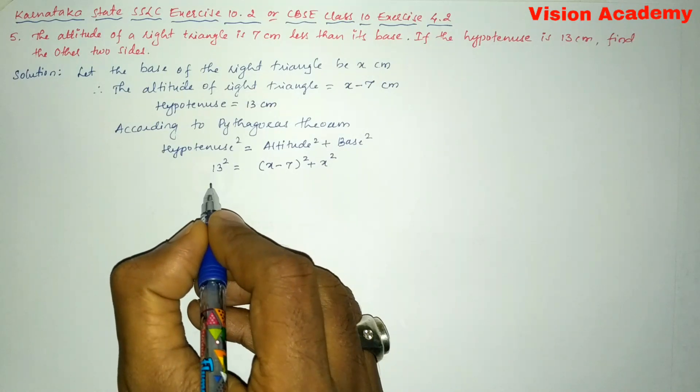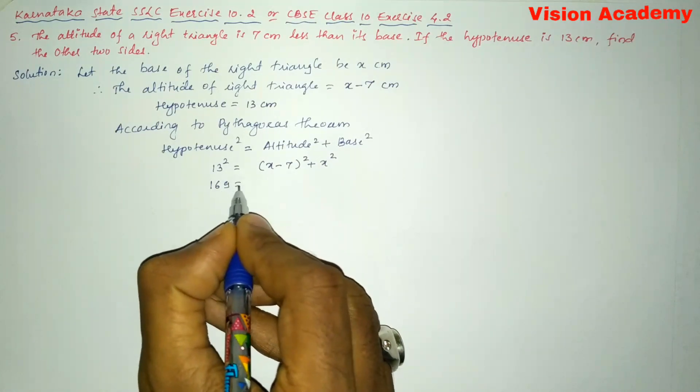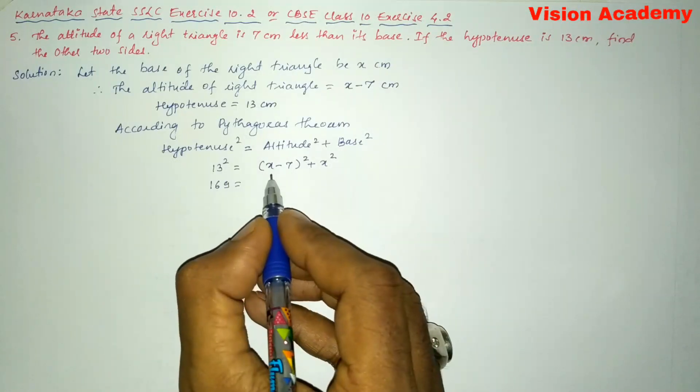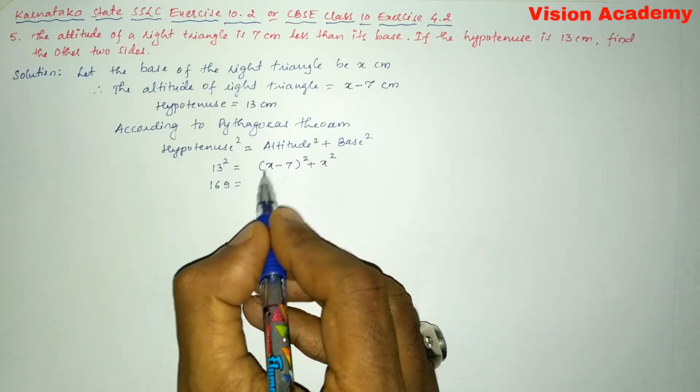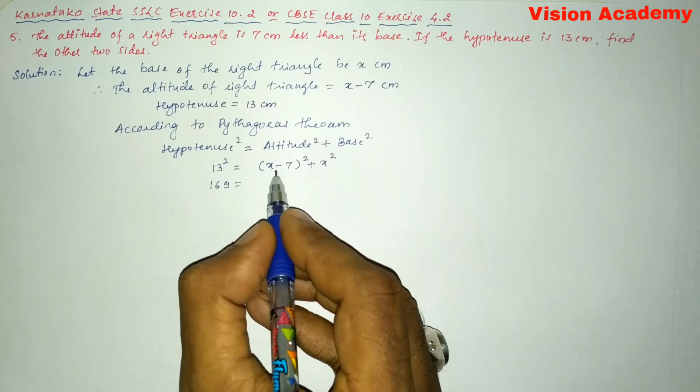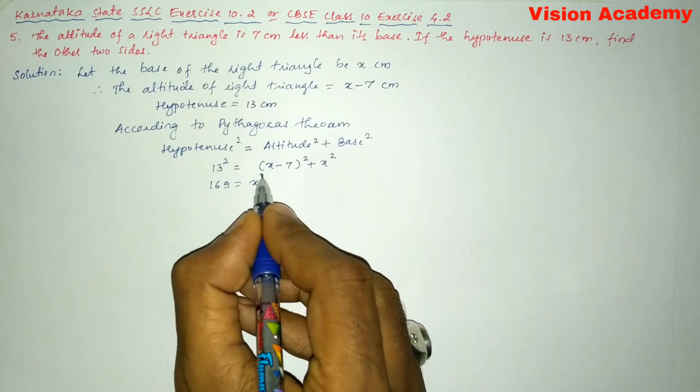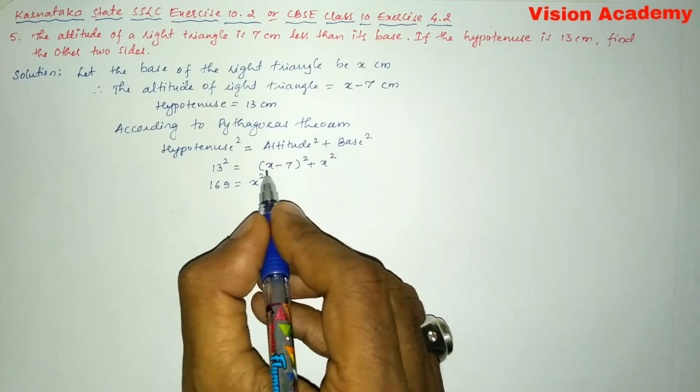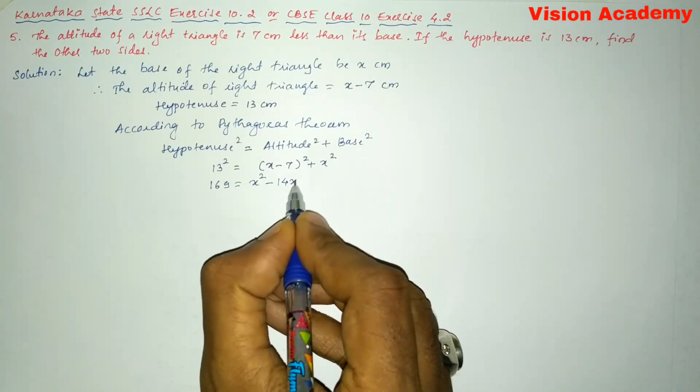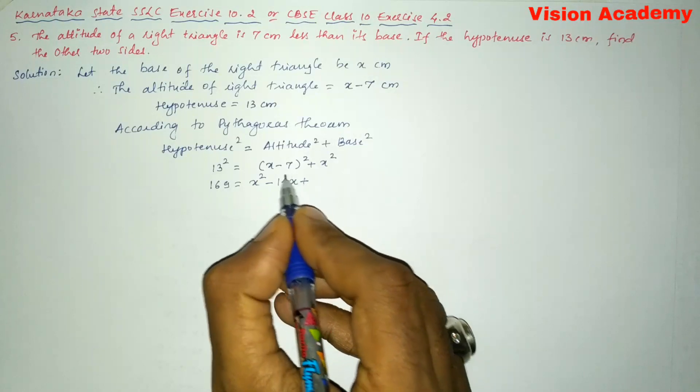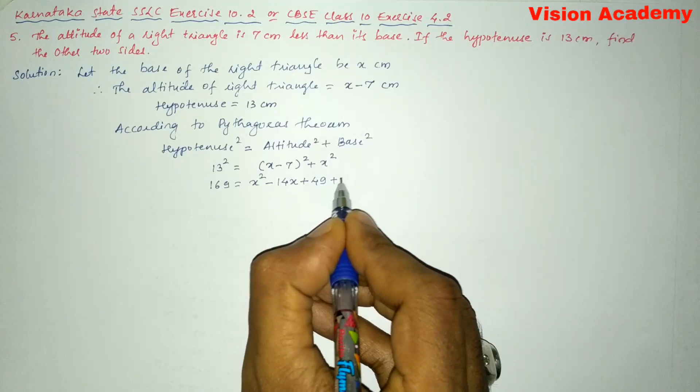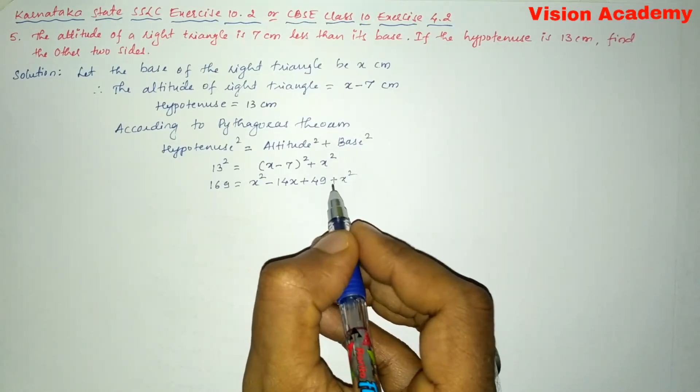Now we will further simplify this one. So 13 square is 169 is equal to here this is in the form of a minus b whole square. We have to expand this one as a square minus 2ab plus b square. So here I will write x square minus 2 times 7 is 14, 14 into x is 14x plus b square is 7 square. So 7 square is 49 plus this x square as it is.